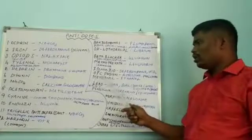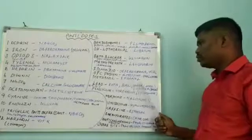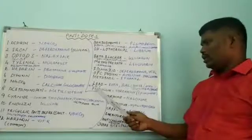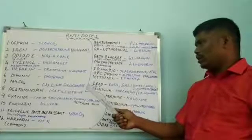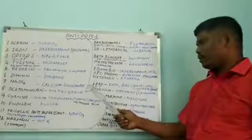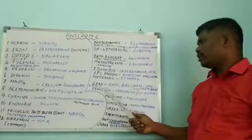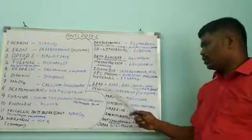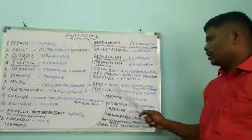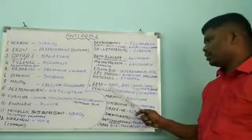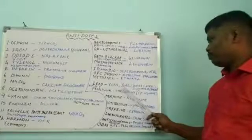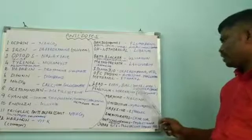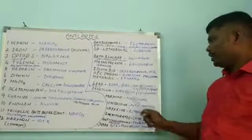In methanol overdose, ethanol is used as an antidote. In lead poisoning or heavy metal poisoning — like arsenic, mercury, gold — EDTA (ethylene diamine tetraacetic acid), injection BAL, dimercaprol, or succimer is used as an antidote.